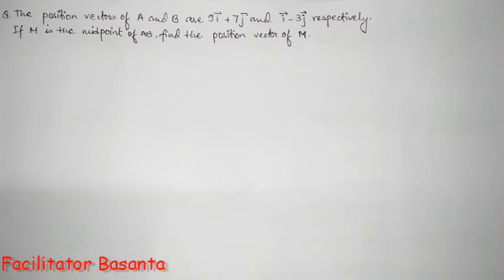The position vectors of A and B are 9i plus 7j and i vector minus 3j vector respectively. If M is the midpoint of AB, find the position vector of M.